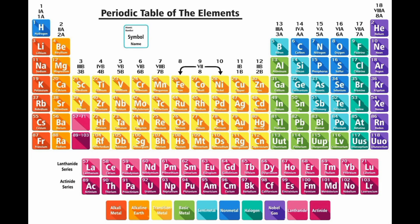The periodic table is called so because of the periodic trends in the properties of the elements that are observed when they are arranged in the order of their increasing atomic numbers. These periodic trends are the result of the periodic repetition of electronic configuration of elements in the table, which is responsible for the similarity in their chemical properties. The table is arranged in periods, which are horizontal rows, and groups or families, which are vertical columns, based on the element's electron configuration and valence electron count.